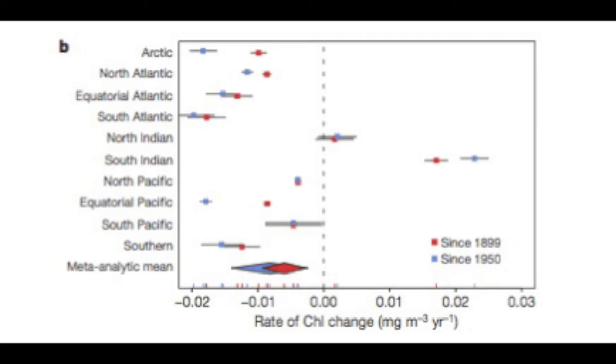The conclusion to these findings was that phytoplankton had declined in 8 out of 10 ocean regions, with a global rate of decline of 1% of the global median per year. The results also showed inter-annual to decadal fluctuations superimposed on these long-term trends, with strong correlation to small-scale climate changes.